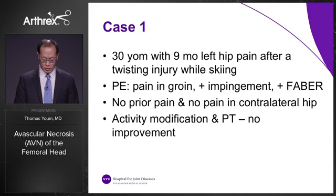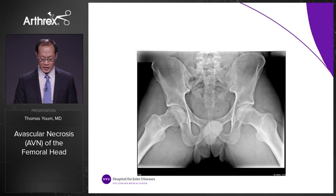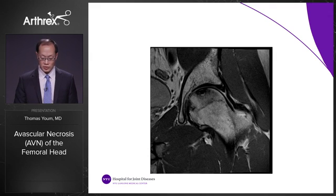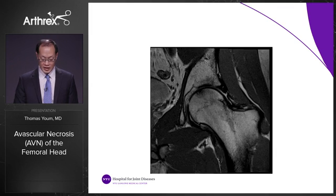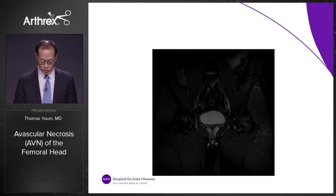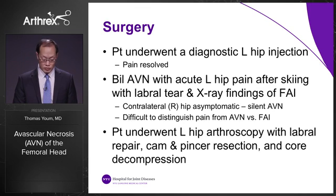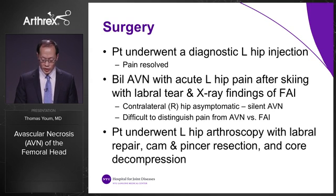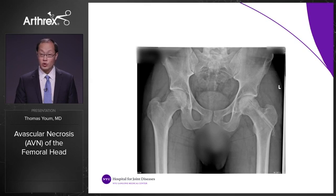First case: a 30-year-old male with nine months of left hip pain after a twisting injury while skiing. On physical exam, he had groin pain with a positive impingement and FABER test. Activity modification and physical therapy led to no improvement. X-rays and MRI showed avascular necrosis of the femoral head with an anterior lesion and a labral tear. A diagnostic left hip injection resolved the pain. Bilateral hip AVN was diagnosed on MRI. The patient underwent left hip arthroscopic surgery with labral repair, cam and pincer resection, and concurrent core decompression. Post-op x-rays show the core decompression tract.